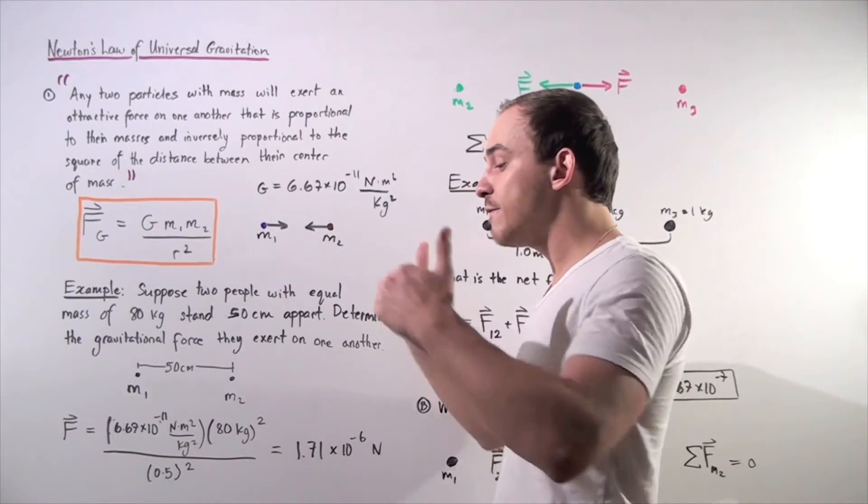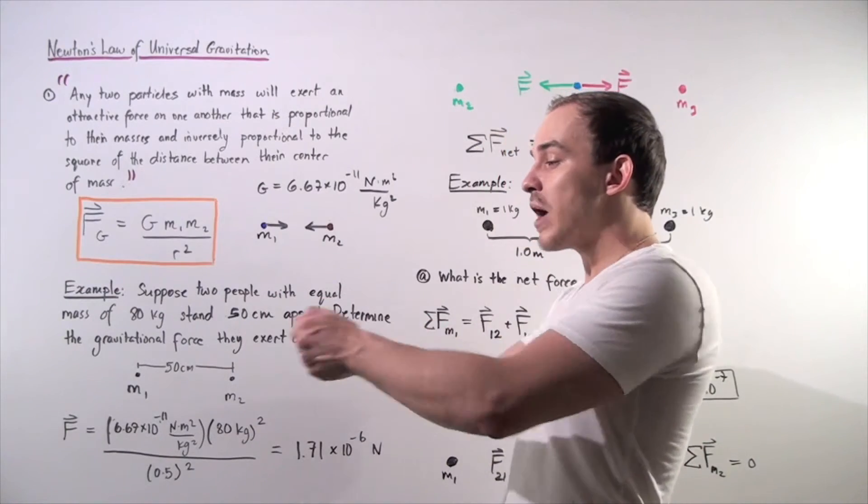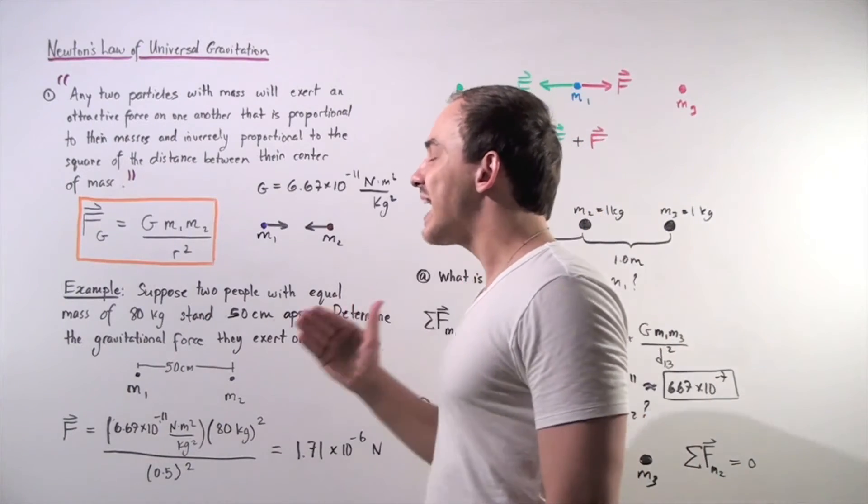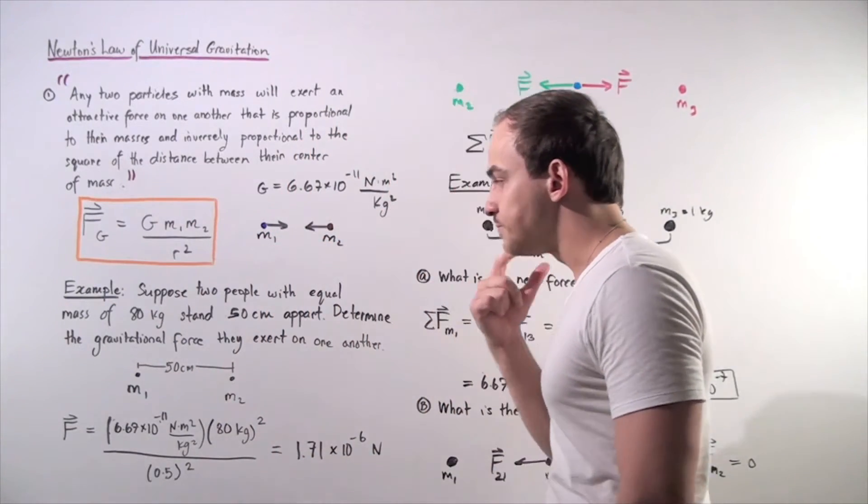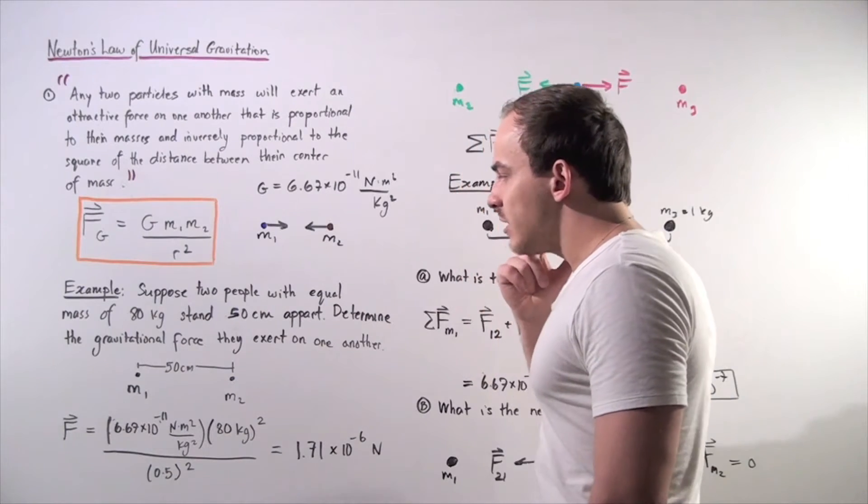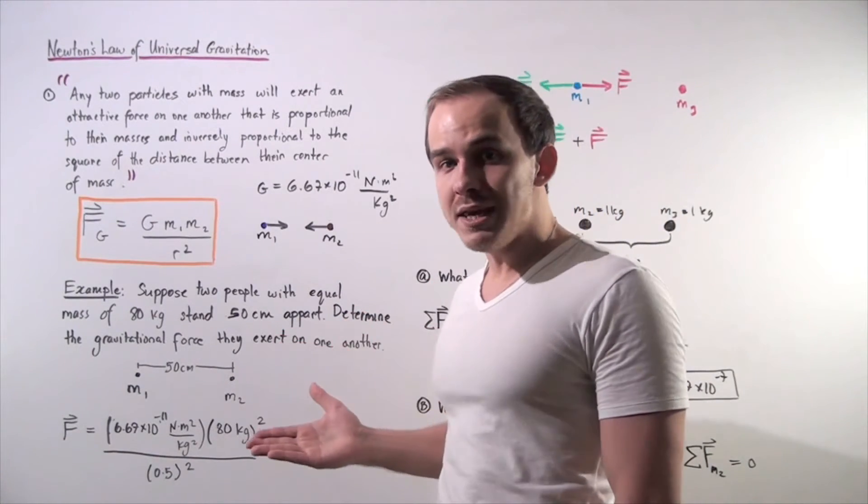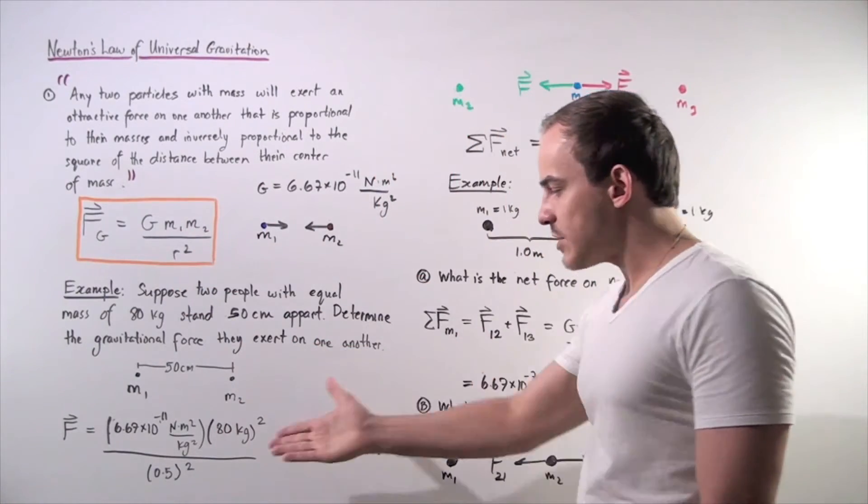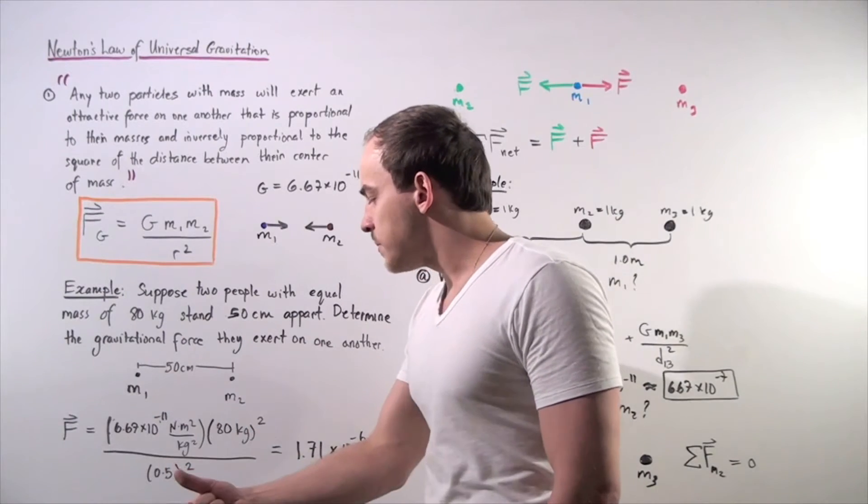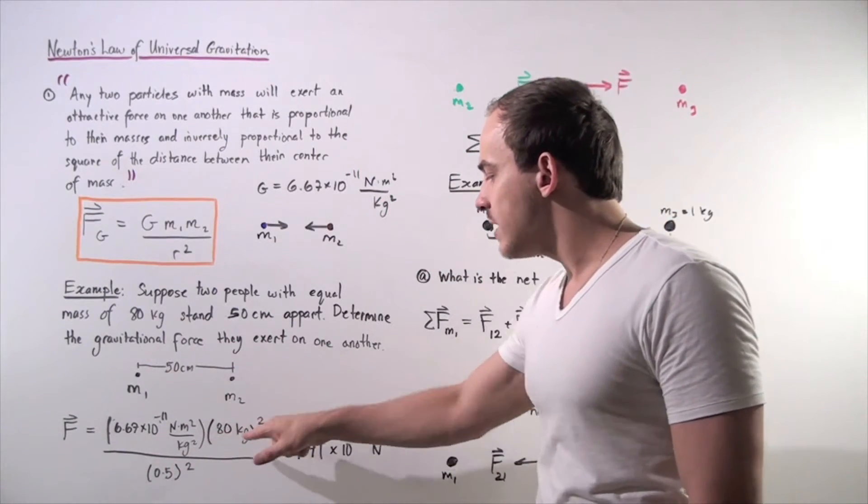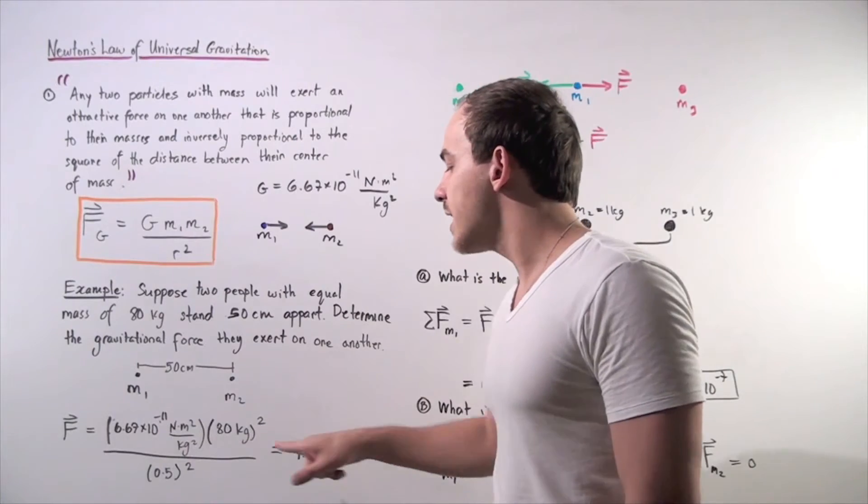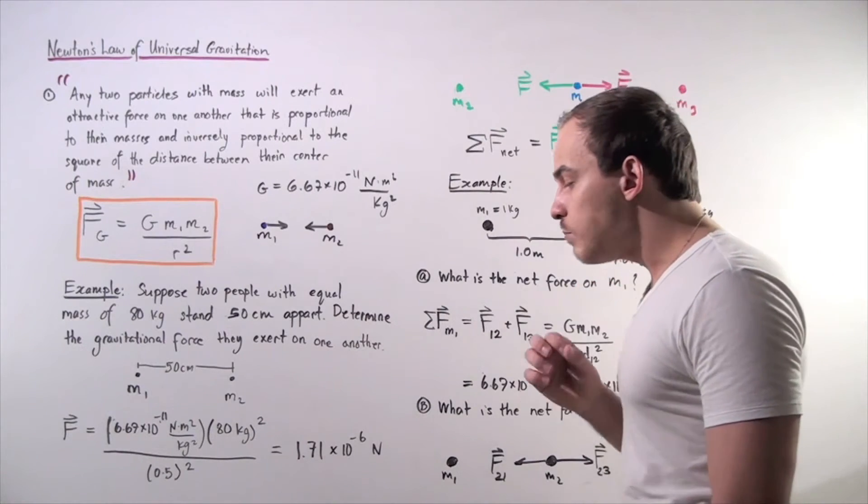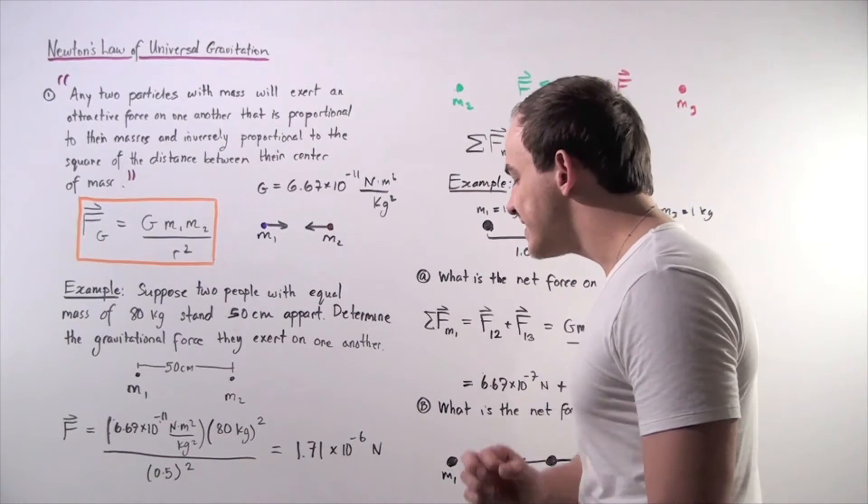The magnitude is given by this equation, but the directions are exactly opposite. So if I was standing here and a second person was standing 50 centimeters away, I would attract that person while that person would attract me with the same exact magnitude of force. First we must realize that 50 centimeters is 0.5 meters. We plug in our values: our constant multiplied by the mass of both objects, so 80 kilograms squared divided by 0.5 meters squared. And we get 1.71 times 10 to the negative 6 newtons.